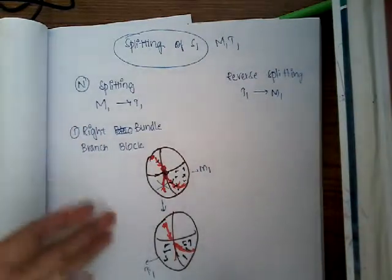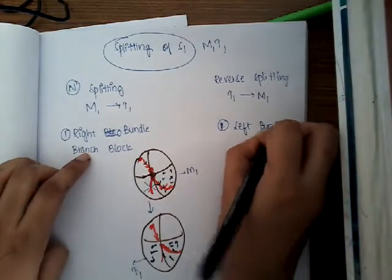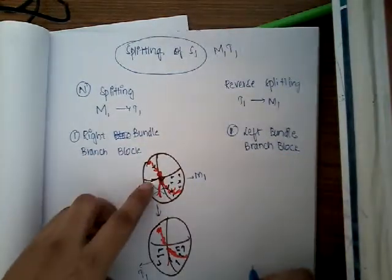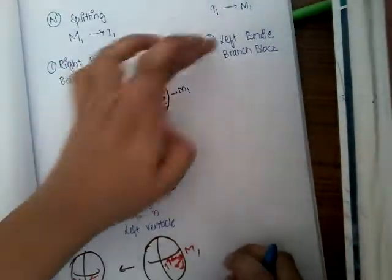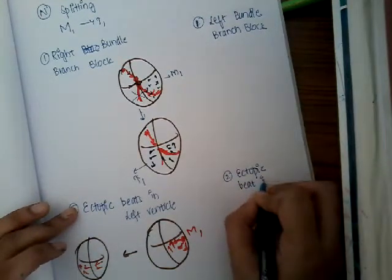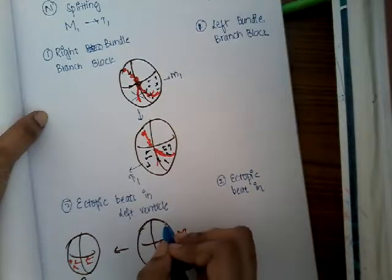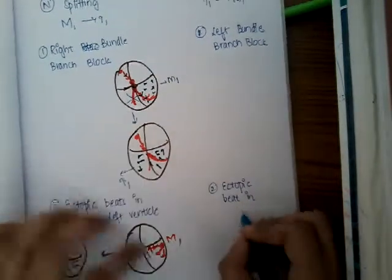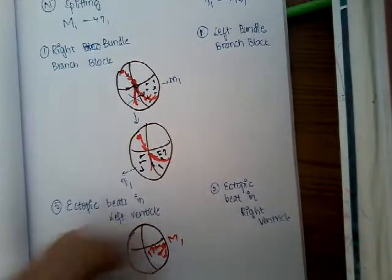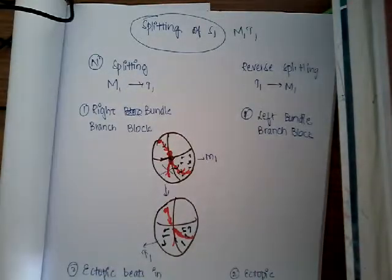For reverse splitting it is the opposite. In left bundle branch block, impulses reach the right ventricle first and then the left ventricle, so T1 comes before M1. Similarly, when ectopic beats are present in the right ventricle, there is first contraction of the right ventricle producing T1, and then contraction of the left ventricle producing M1. These are the causes of reverse splitting of S1.